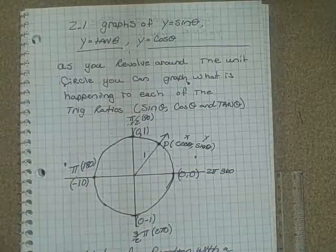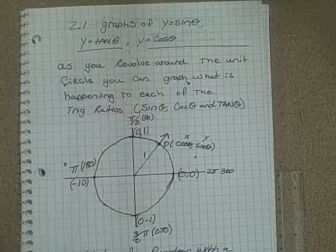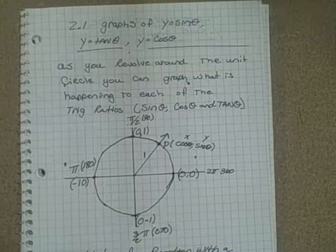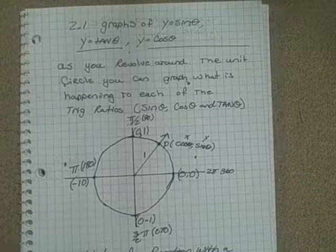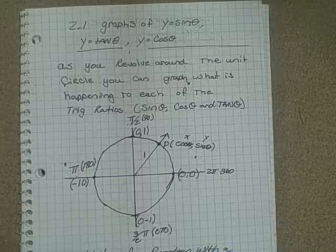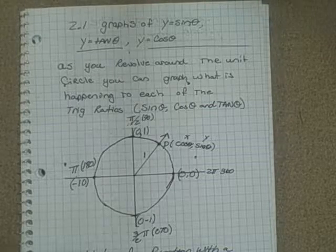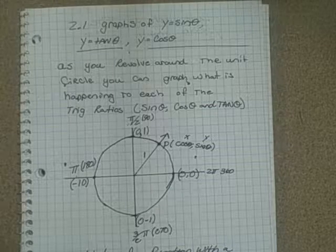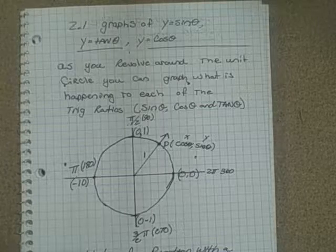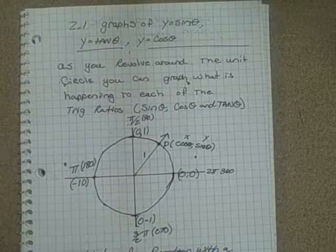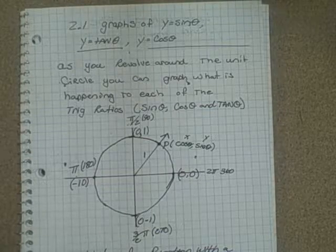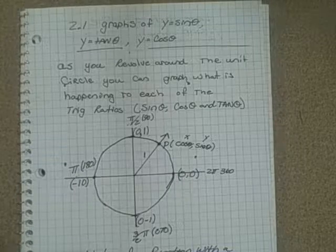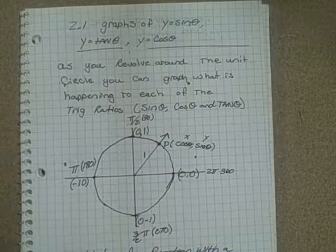This is the beginning tutorial for Chapter 2 on Circular Functions. We're going to look at what a circular function is and examine the three graphs: sine, tangent, and cosine. We'll see what they look like and how to draw them, including using calculators.